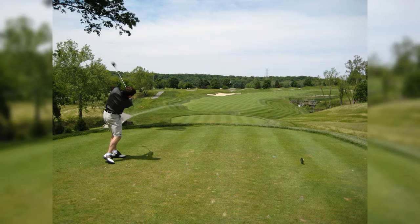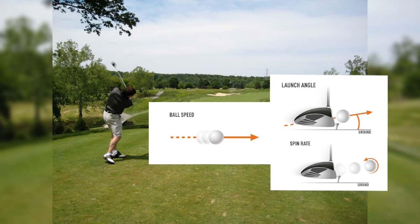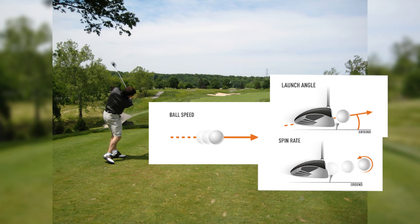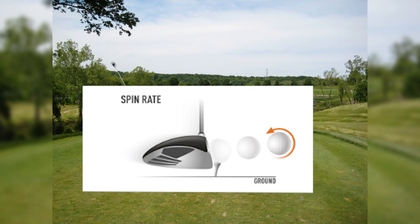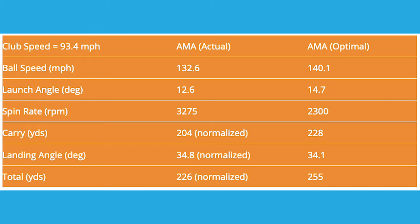Hitting your driver with a ball speed matched with the right launch conditions is key to maximising both carry and total distance. Focusing on the second part of the launch condition equation — spin rate, which is a measure of the amount of spin on the golf ball immediately after impact — TrackMan's data shows that the average male amateur hits drives with too high a spin rate compared to what is optimal, and partly as a result loses 24 yards of carry and 29 yards of total distance. Spin rate numbers, as with launch angle data, should not be considered in isolation, but this analysis highlights the general rule that more spin with your driver will reduce the distance you hit the ball.